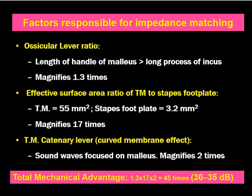The third mechanism is the tympanic membrane catenary lever, that is the curved membrane effect. As sound waves pass towards the tympanic membrane, they will be focused on the malleus, leading to a catenary lever action or curved membrane. When the malleus is less mobile, that membrane acts to dampen the malleus, and therefore there will be a curved membrane leading to a gain of around 2 times. The sound waves are always focused on the centre of the tympanic membrane, which magnifies sound around 2 times.